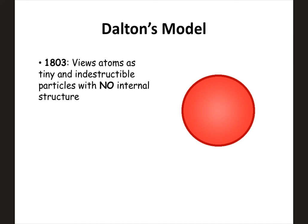Our first model of the atom is Dalton's model. If you remember back to Dalton's atomic theory, he basically said that atoms were tiny indestructible particles with nothing inside. He didn't know about the subatomic particles — protons, neutrons, electrons. So Dalton basically just thought the atom was a circle. It's perhaps the easiest model of the atom to draw and remember — you just have to draw a circle.